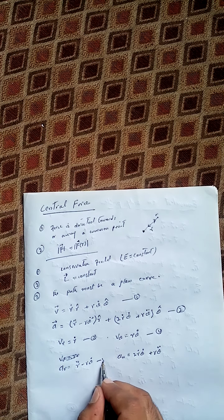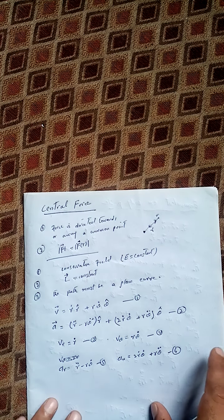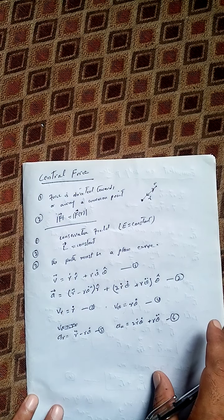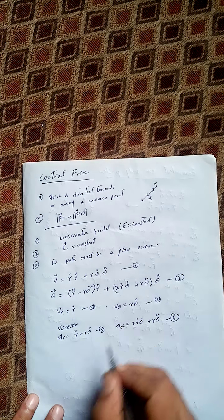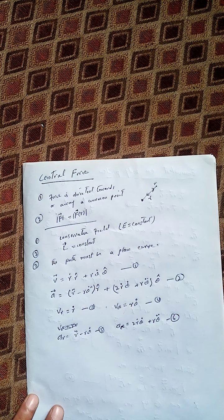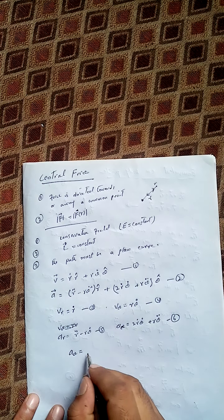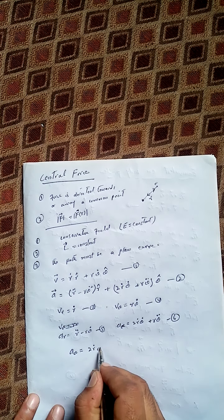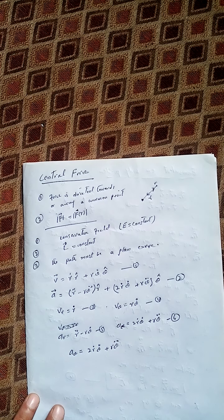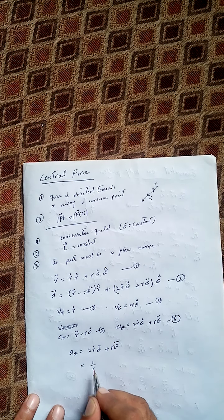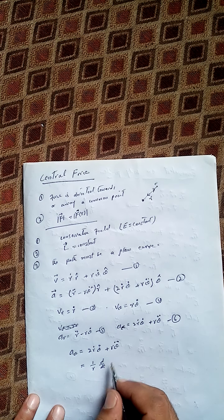Now from the tangential component of acceleration, let's study it more carefully. The tangential component of acceleration is a_θ = 2ṙθ̇ + rθ̈, but this can be written as (1/r) · d/dt(r²θ̇).